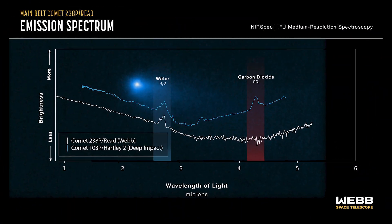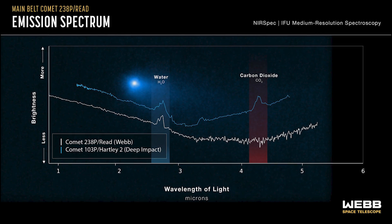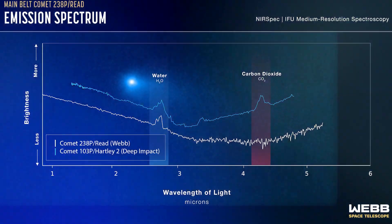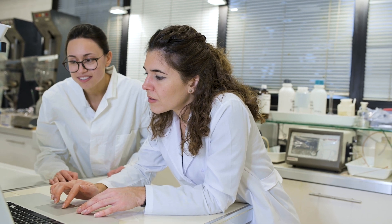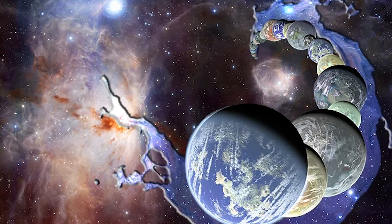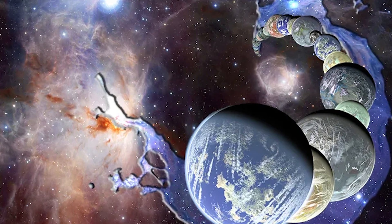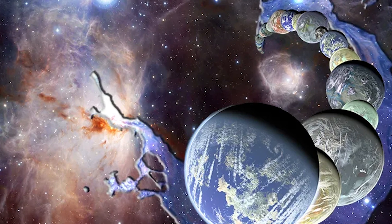However, the discovery of water came with a new mystery. No carbon dioxide was found in comet 238P Read compared to other comets. With this, scientists are now faced with a brand new mission to understand the absence of CO2 while still exploring the history of ancient water in the solar system.